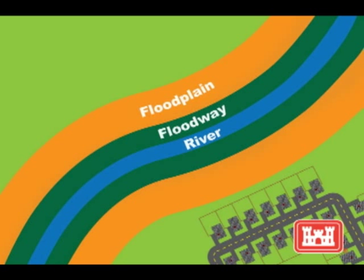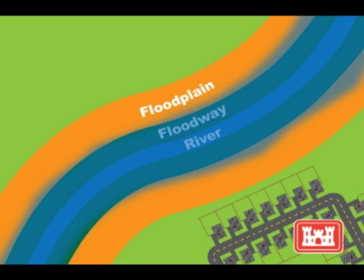After property owners relocate, the structures will be removed from the floodway and floodplain. This will allow water to flow through an area that is wider and able to accommodate higher volumes of water, increasing the capacity of the natural stream.